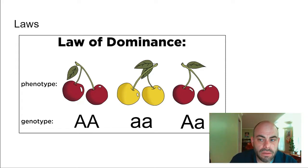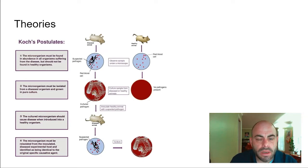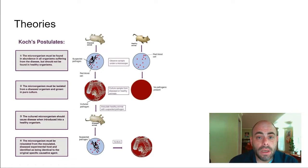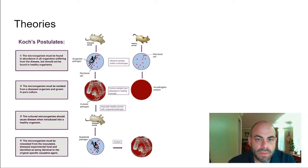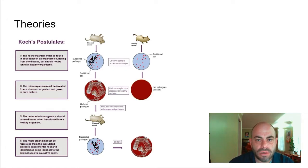A theory is different from a law. A theory is an explanation for a broad range of natural phenomena. A lot of people believe there's a hierarchy where a hypothesis becomes a theory and then a theory becomes a law — like they're waiting to graduate. That's not how this works. A theory gathers a whole realm of thought and attempts to explain it.